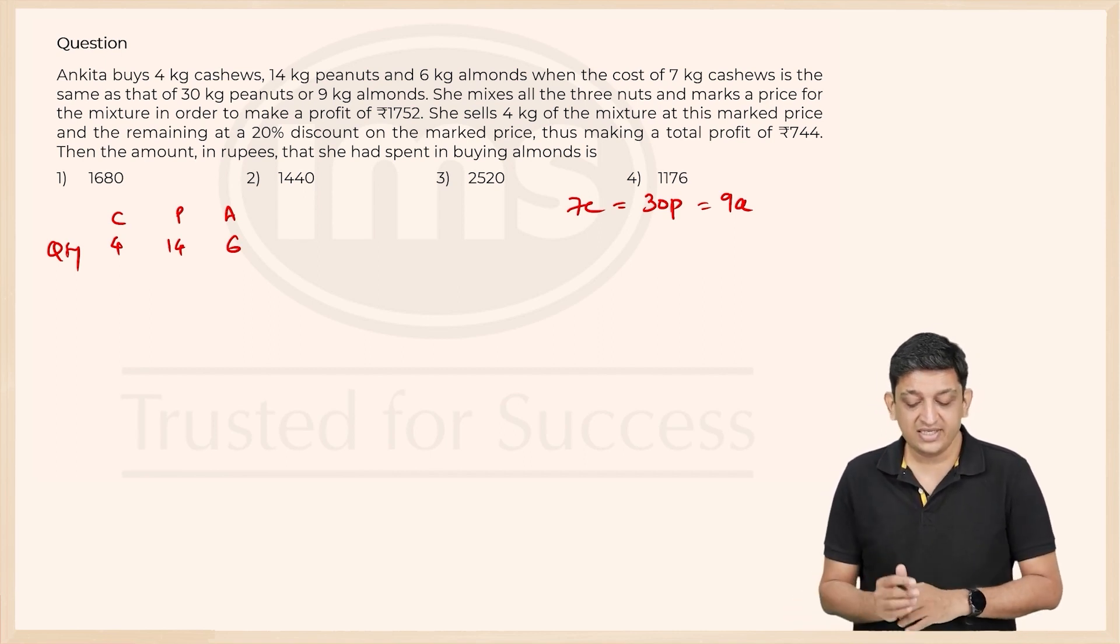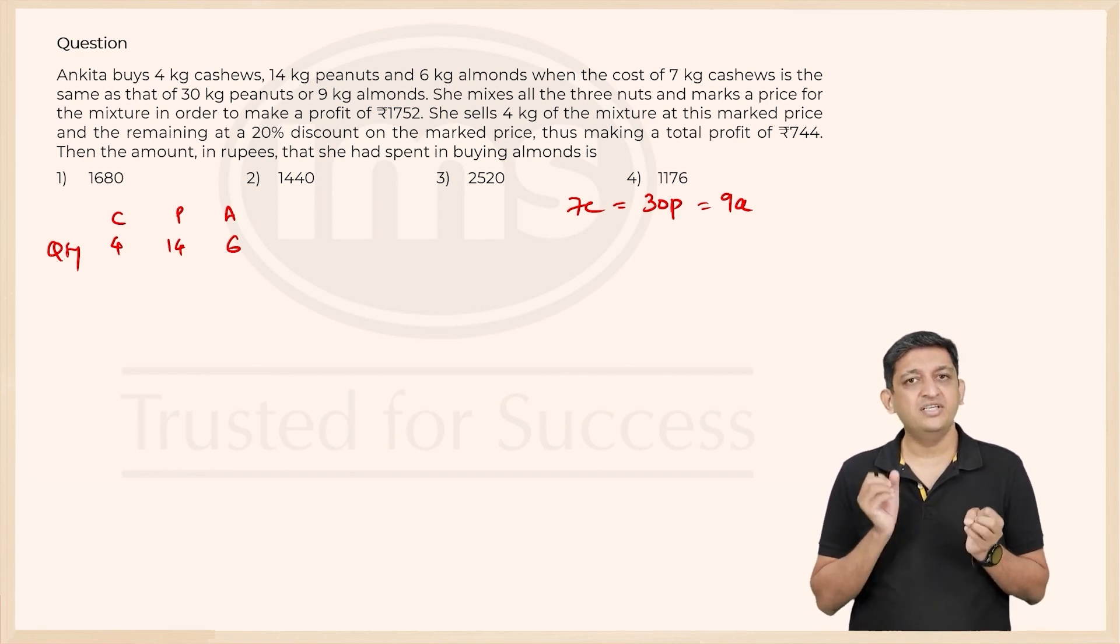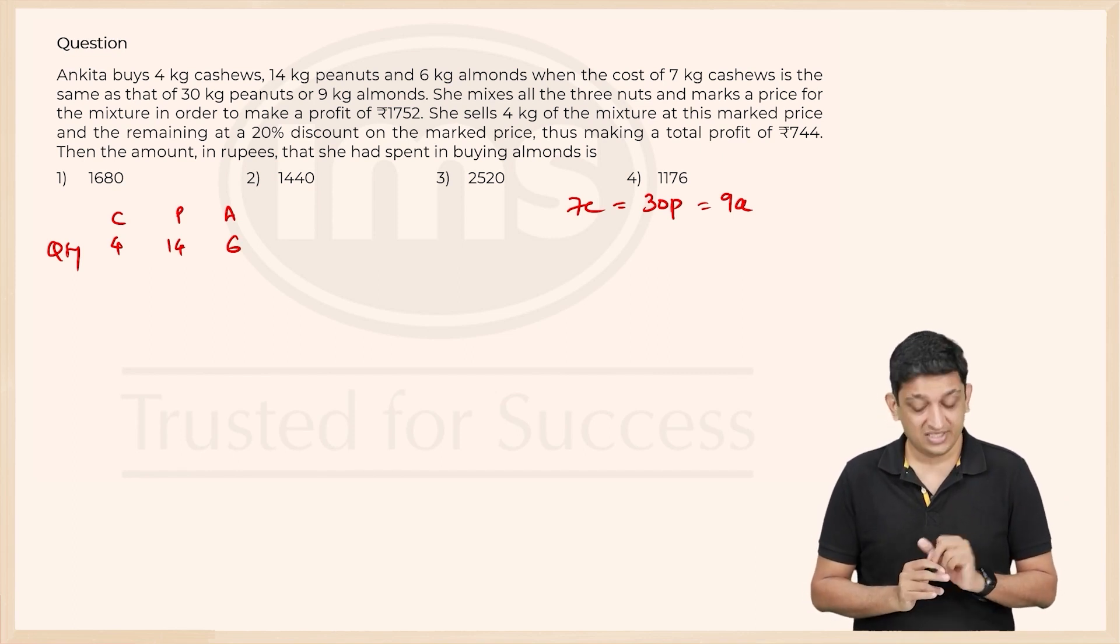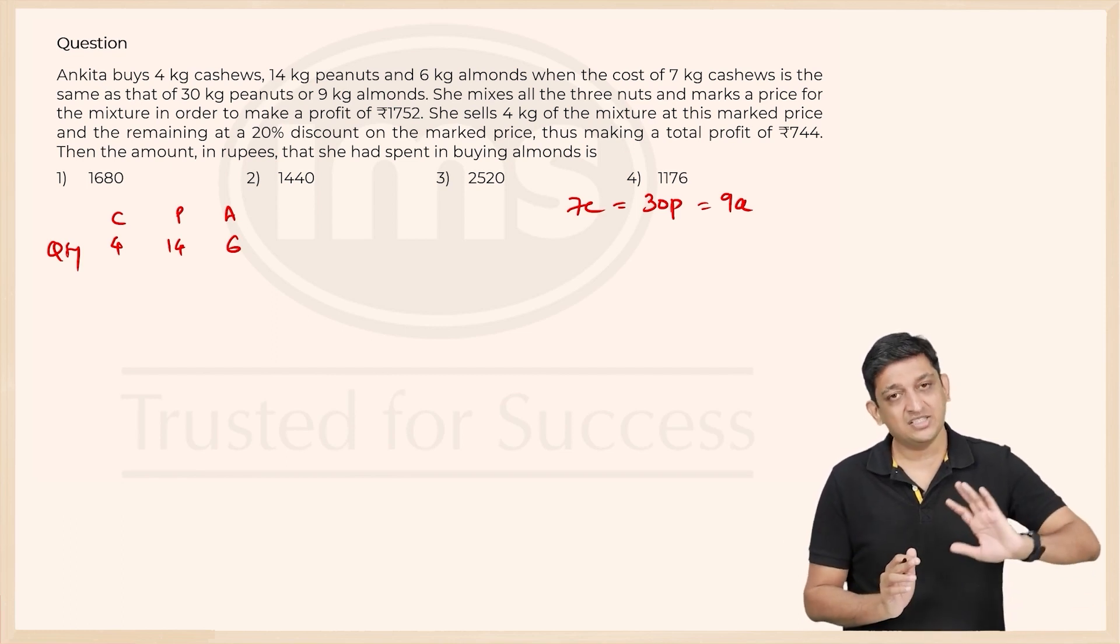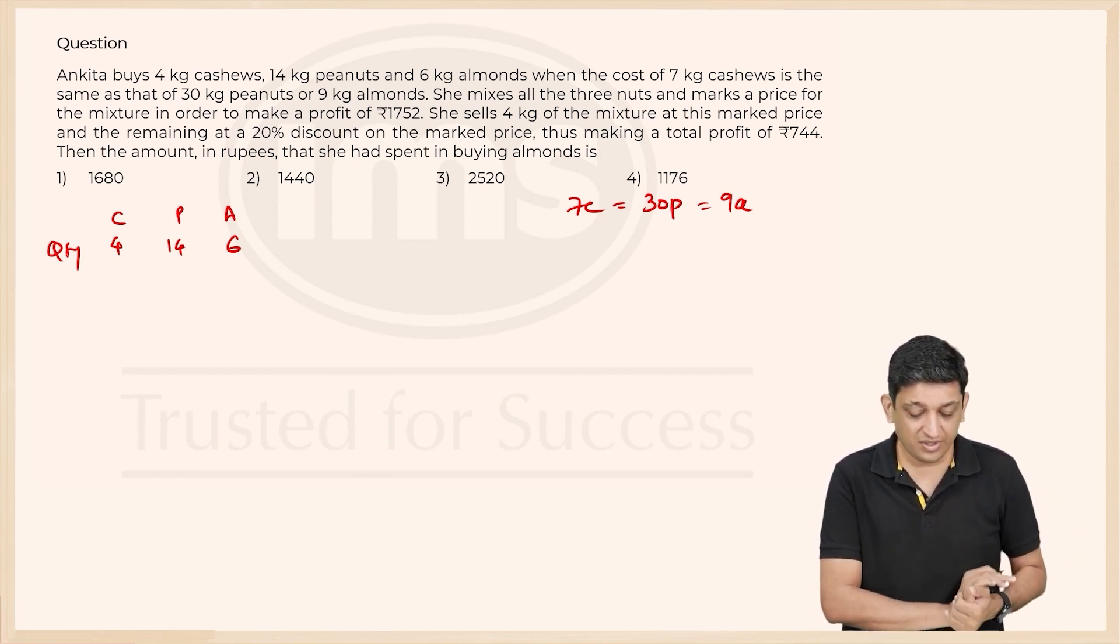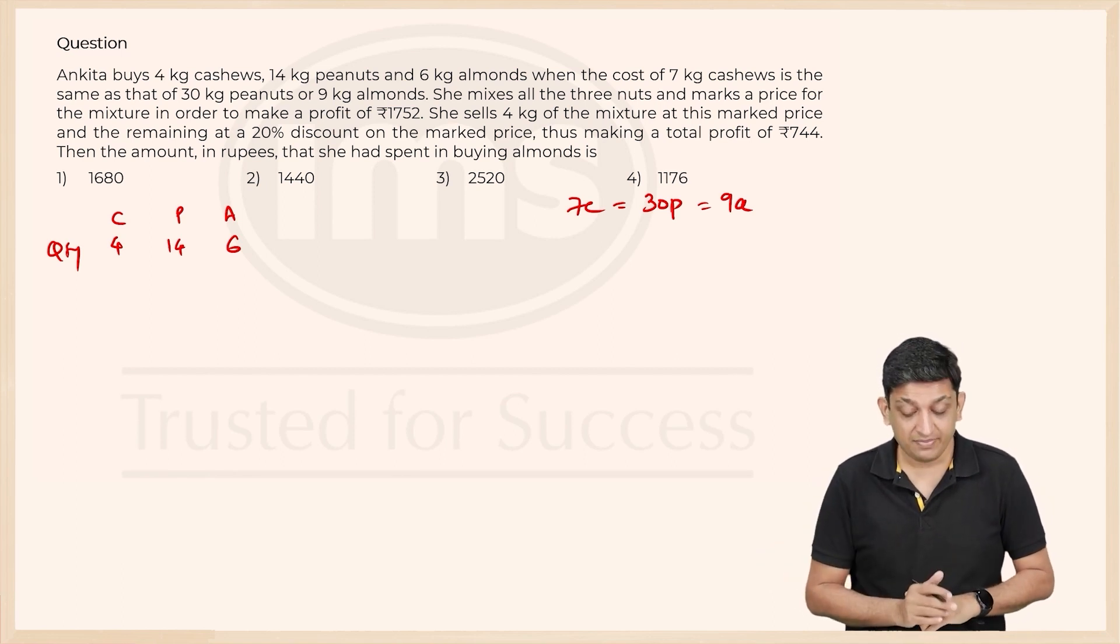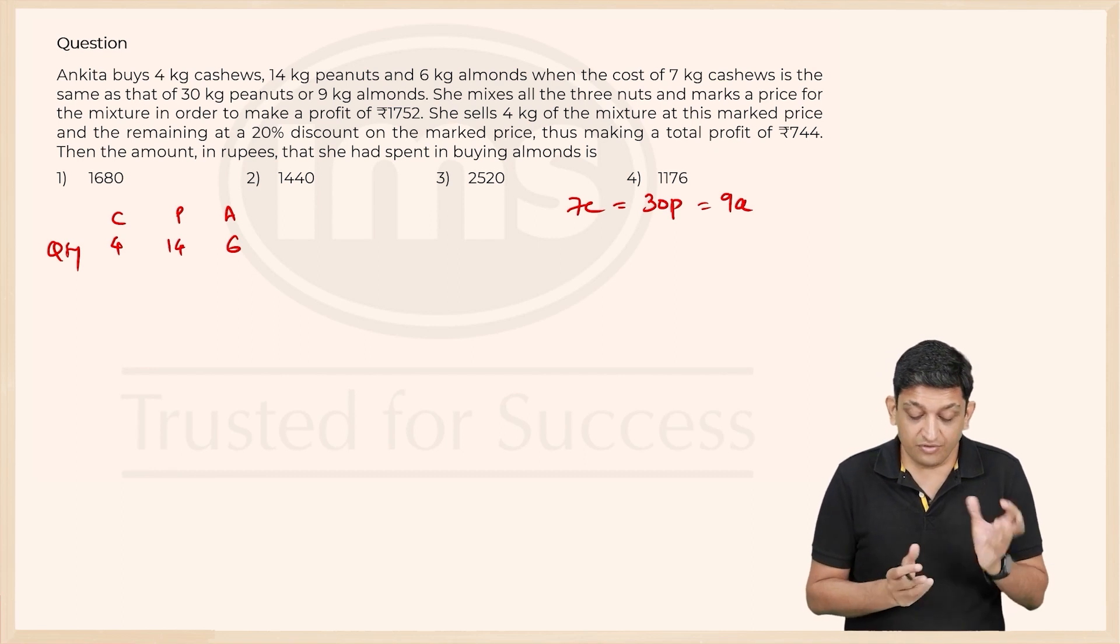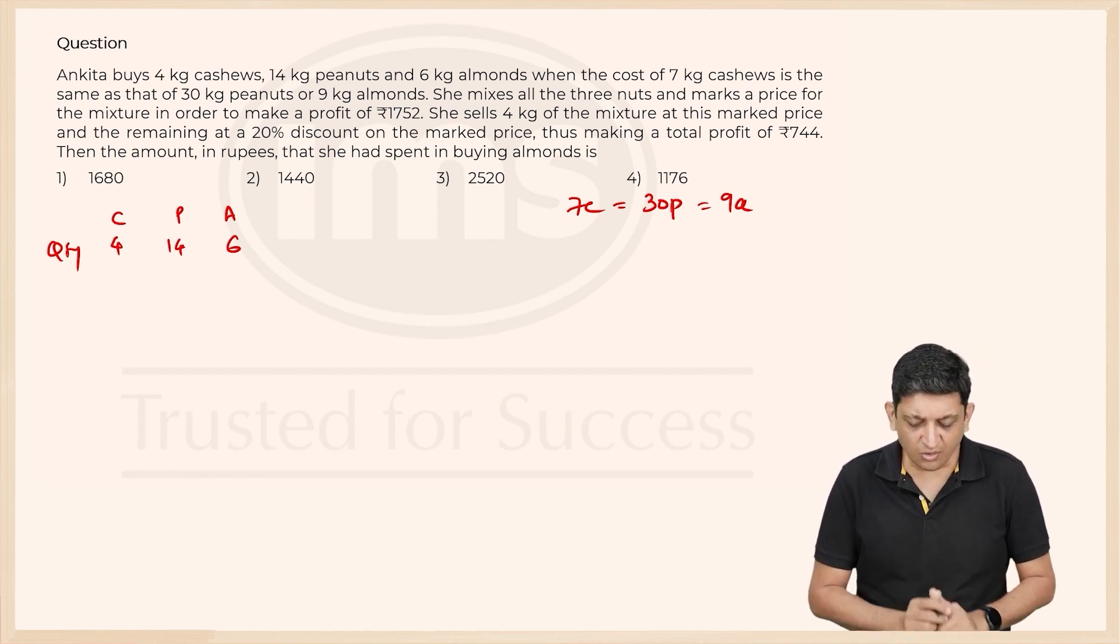Now she mixes all the 3 nuts and marks a price for the mixture in order to make a profit of 1752. Now that is a really odd number to look at. Then what she does is, she sells 4 kg of this mixture at this marked price, and the remaining at a 20% discount on the marked price, thus making a total profit of 744 rupees. We have to figure out how much money did she spend on buying almonds.